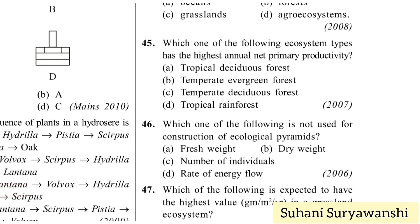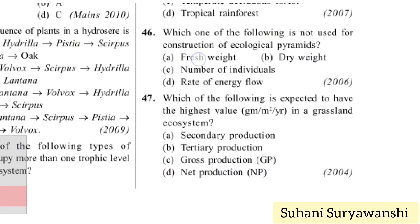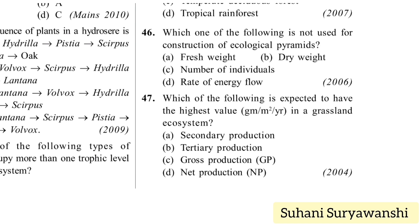Which ecosystem type has the highest annual net primary productivity? Options: tropical deciduous forest, temperate evergreen forest, temperate deciduous forest, and tropical rainforest. Net primary productivity equals gross primary productivity minus respiratory losses. The highest annual net primary productivity is in tropical rainforest — option D.